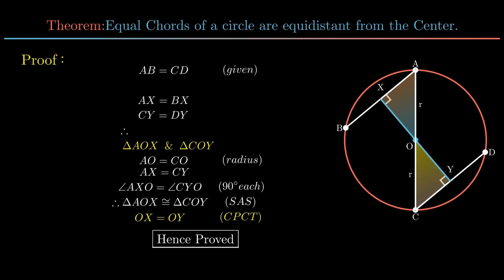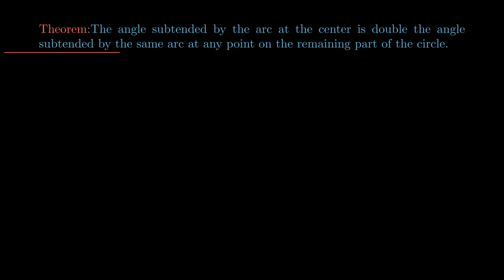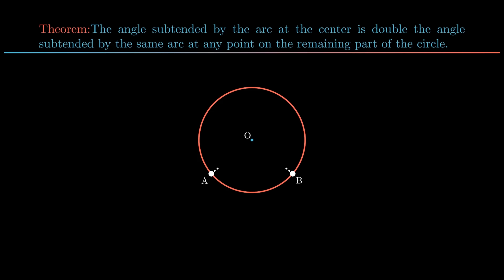Moving on to the next theorem: the angle subtended by an arc at the center is double the angle subtended by the same arc at any point on the remaining part of the circle. Consider a circle with center O and points A and B on the circle acting as a minor arc. This minor arc subtends angle AOB at the center. Let P be any point on the remaining part of the circle, which can also be called the major arc.